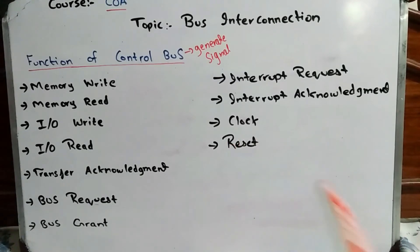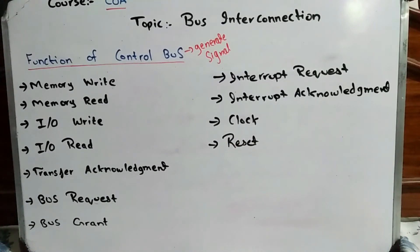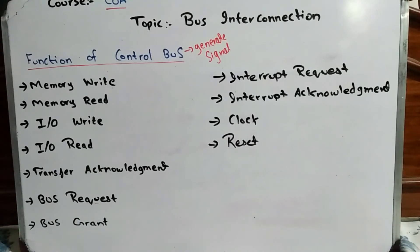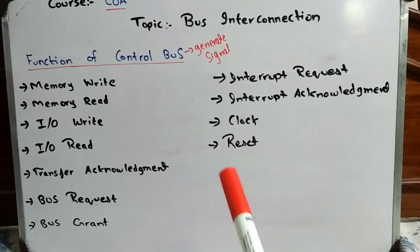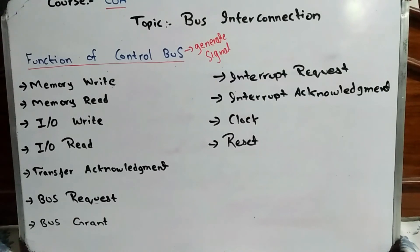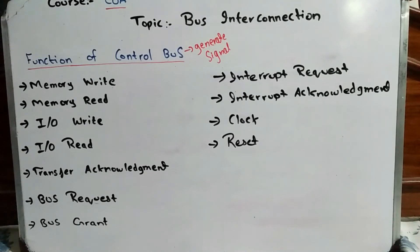The next function is clock, which synchronizes instructions within the system. The last function is reset. The reset function is applied when two devices request the bus at the same time, causing a blockage. The reset function takes the system back to the state before the blockage occurred.